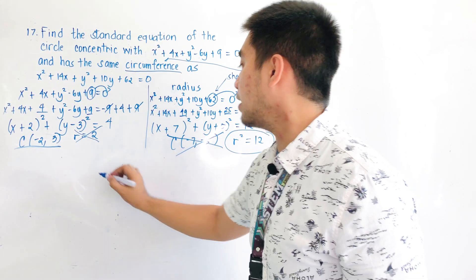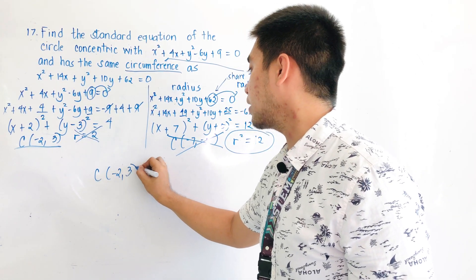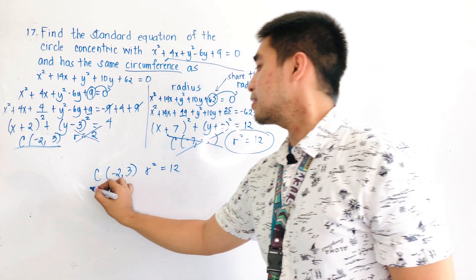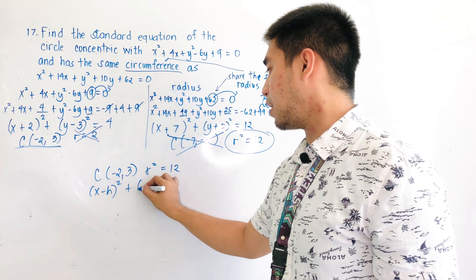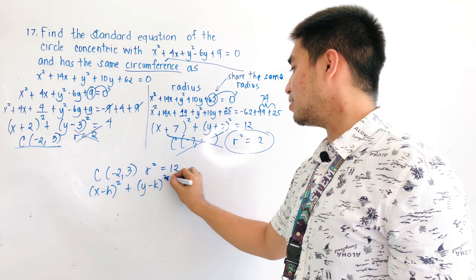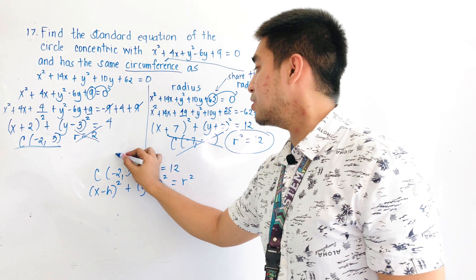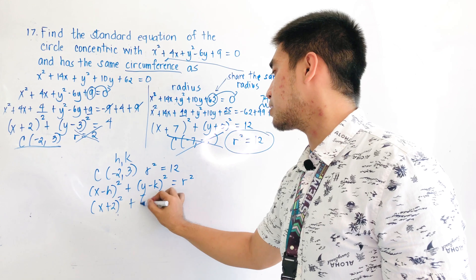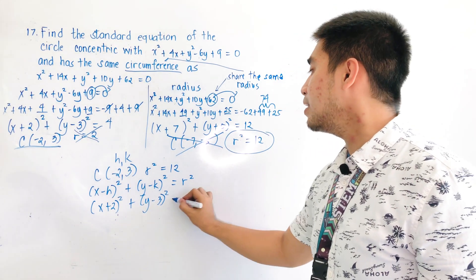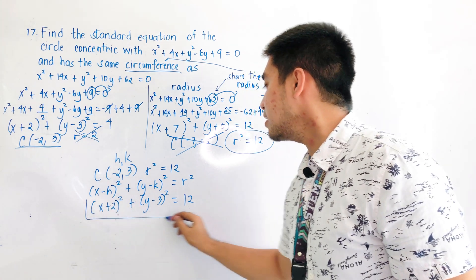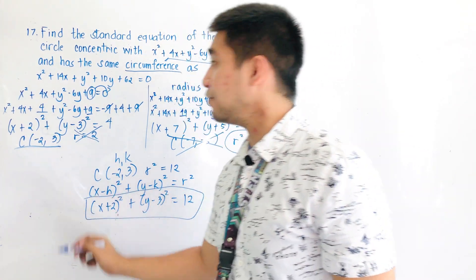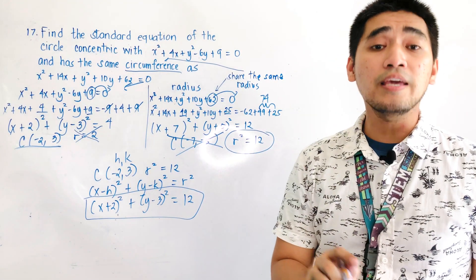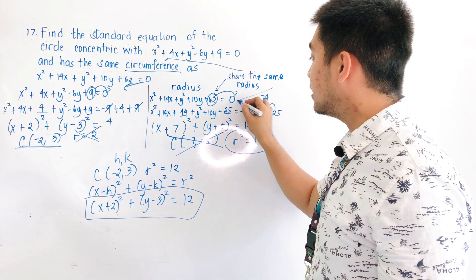The values are: center at (-2, 3) and r² = 12. The standard equation is (x - h)² + (y - k)² = r². Substituting h and k, we get (x + 2)² + (y - 3)² = 12. This is the equation of the circle which is concentric with the first equation but has the same circumference as the second equation.